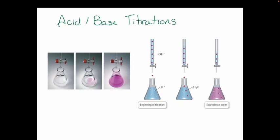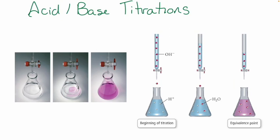So, acid-base titrations. Everybody knows and loves these because you did these for your lab practical in your Chem 1AL course. We did these titrations. Just to remind everybody, you have this piece of glassware called a burette, and what we're going to do is place some titrant — sodium hydroxide — in our burette. And then in our flask, we have some acid.